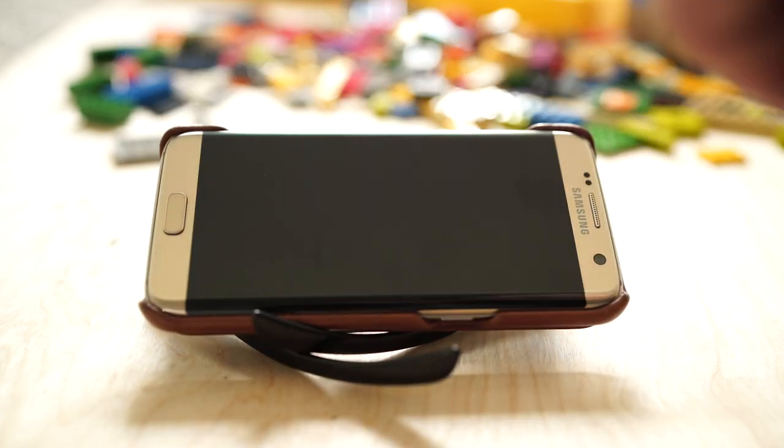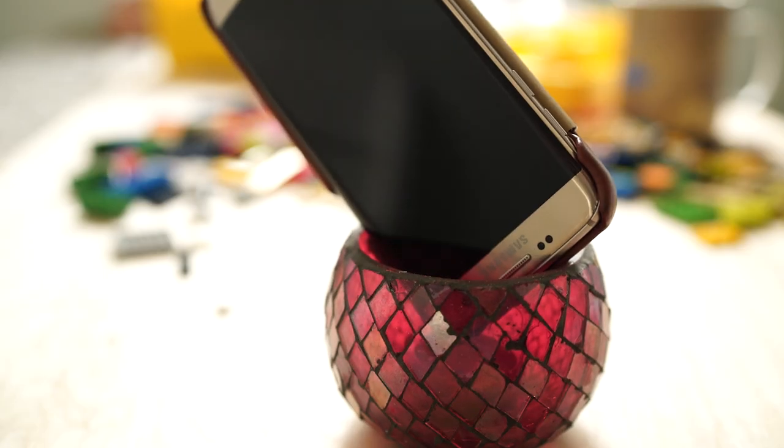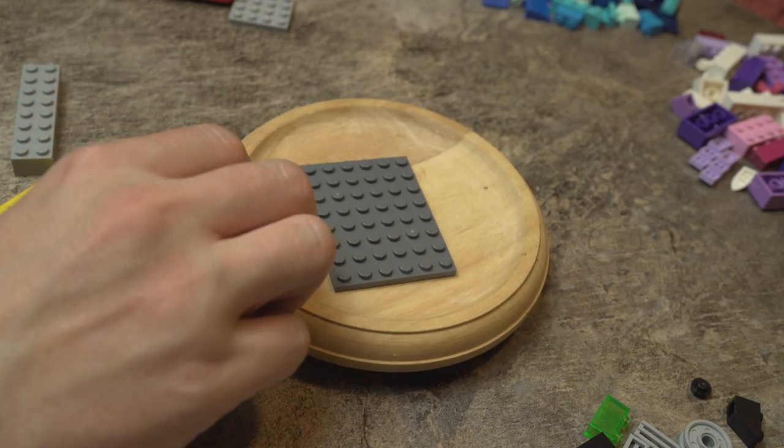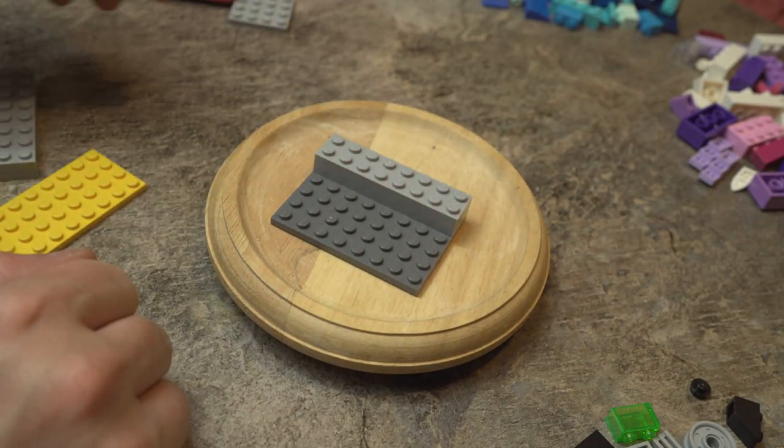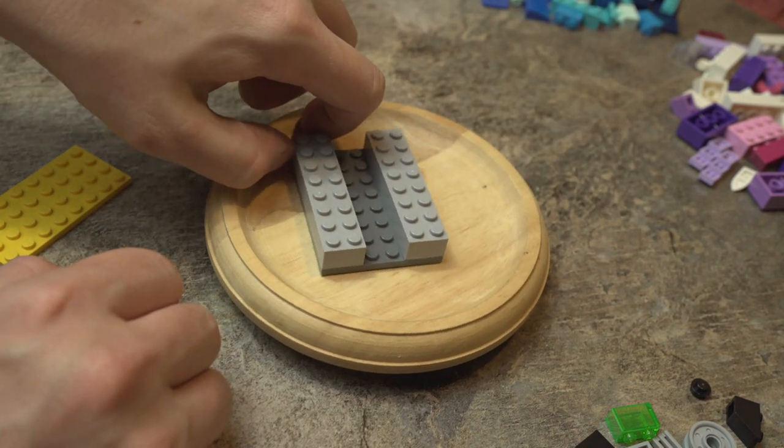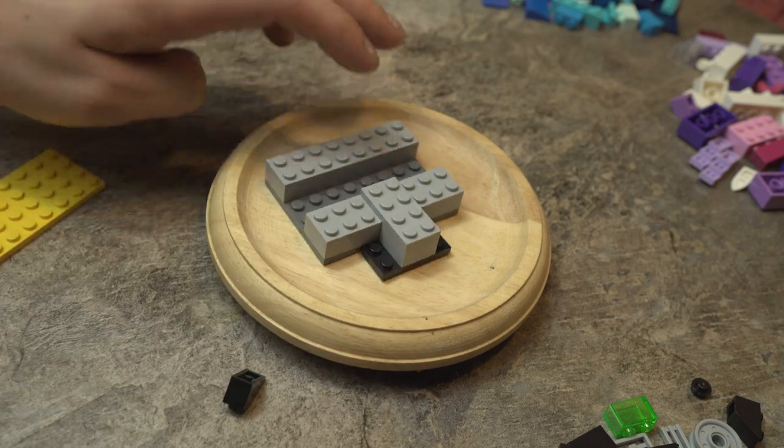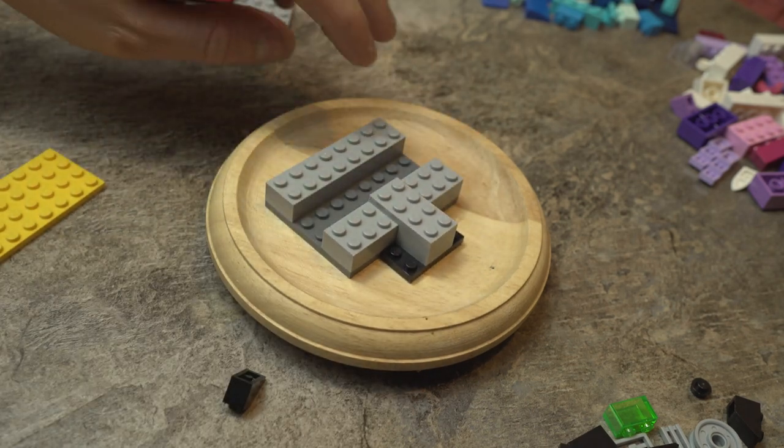There's a million different life hacks when it comes to making a stand for your phone, but rarely can they be this customized and easy. Just get a medium Lego base plate and lay some bricks across the front and back of the panel. After that, just attach an extension off the end. This is going to give the holder some extra support and prevent it from tipping over.